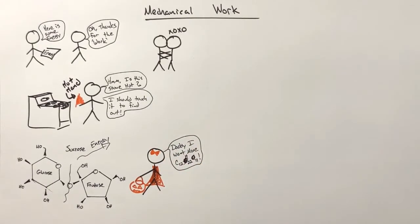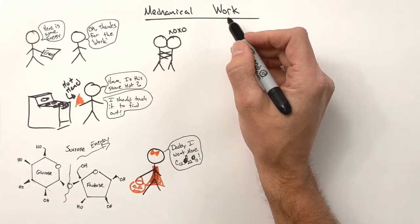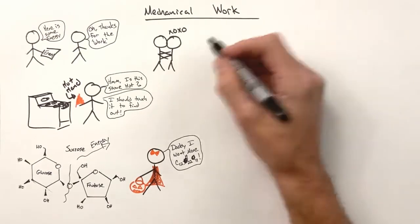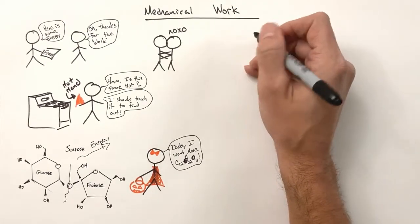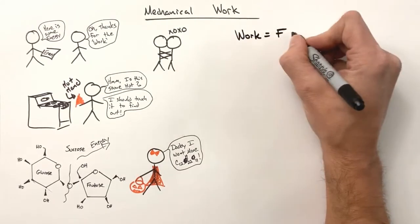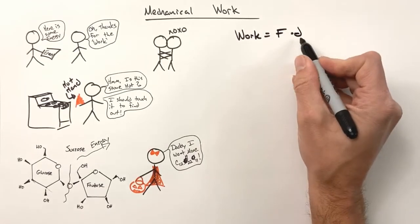So if energy is nothing other than the result of work, then we better get back to working on understanding work. Get it? All right. Mathematically, work is defined as F dot D, where F is force and D is displacement.